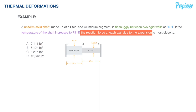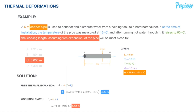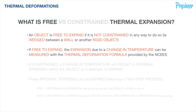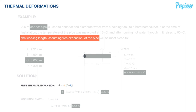Reviewing back to our previous problem, we were dealing with free expansion, where we were really only concerned about the general formula for thermal deformation in the NCEES reference handbook. The free thermal expansion is driven by that formula: the elongation delta-T due to thermal change equals the coefficient of thermal expansion times the original length times the temperature gradient.